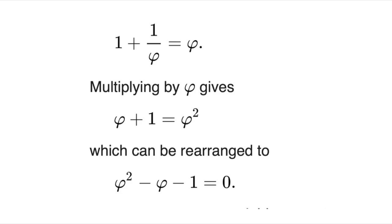It can be defined in various ways. For example, it's the only number equal to its own reciprocal plus 1. In other words, phi equals 1 over phi plus 1, so that phi squared equals phi plus 1.